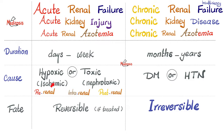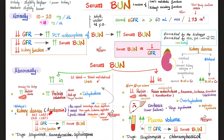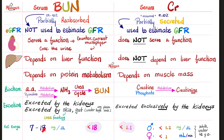Remember that acute kidney injury could be pre-renal, intrarenal, or post-renal. If my kidney is failing, serum creatinine will go up because there is no one to excrete it, and serum blood urea nitrogen will also go up. The normal BUN level is less than 18 mg/dL, and normal creatinine is less than 1.2 mg/dL. The average BUN is 15 and average creatinine is 1, giving a BUN-to-creatinine ratio of 15.